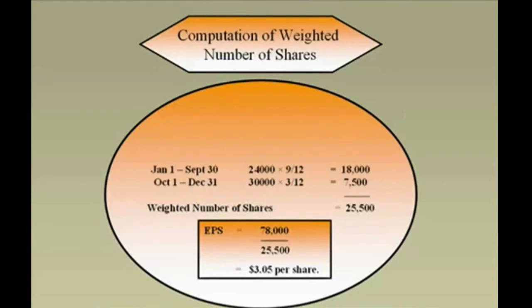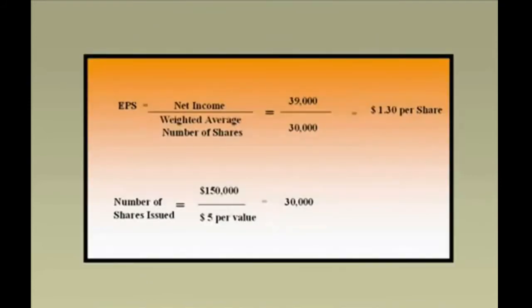With net income of $78,000 divided by the weighted average of 25,500 shares, EPS is $3.05 per share. For Jackville Company (Part L): $150,000 worth of shares at $5 par value means 30,000 shares were outstanding. Net income of $39,000 divided by 30,000 shares gives earnings per share of $1.30. In this case it was straightforward because there was no need to weight the shares.